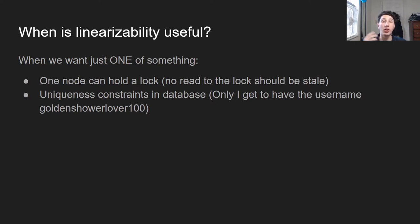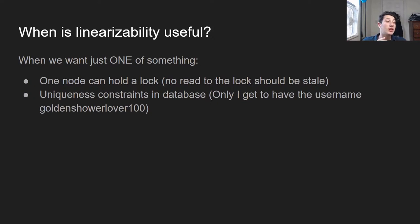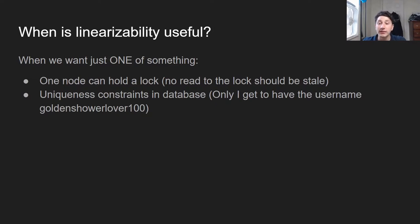If all the replicas are not in sync with one another at the right time, what might happen is I want to be 'golden_shower_lover100' and I write that to replica 1, but then you write to replica 2 wanting the same username, and my username write has not been propagated to replica 2 yet — now we have a conflict.